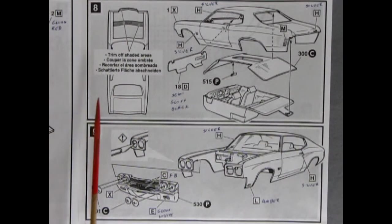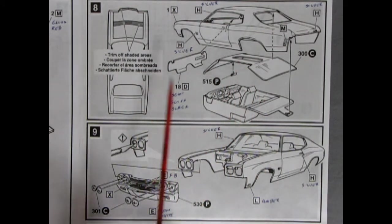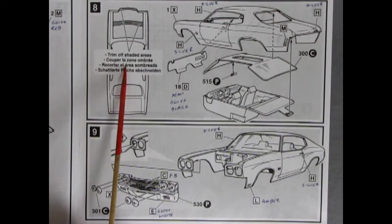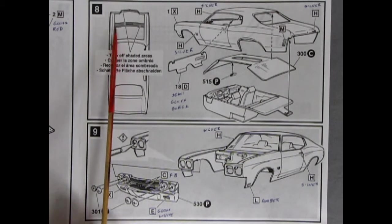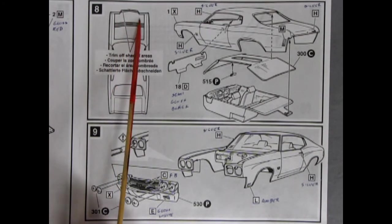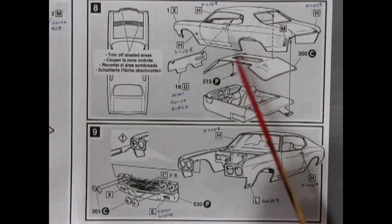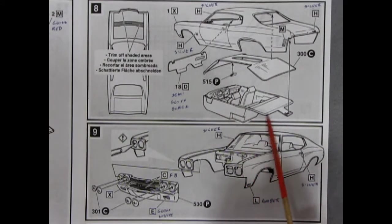And here we have panels 8 and 9. I'll show them both together because it's all part of the same. So it says to trim off the shaded areas. So right here in between the fenders. And a little bit off the body. Between those headlights. And then there's our firewall going in here. Up to the front of the interior tub.